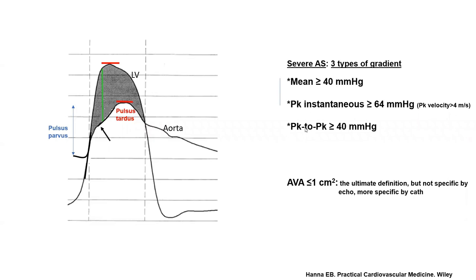We are somewhat lucky in the cath lab because peak-to-peak gradient is often approximately equal to the mean gradient. Mean gradient is usually approximately equal to peak-to-peak gradient, and it is approximately two-thirds of the peak-instantaneous gradient. If you forget, just remember the guidelines: severe AS is defined by a mean gradient over 40 mmHg. The gradients are very specific for severe AS — if you fulfill the gradient criteria, you do have severe AS. You don't even need to look at the valve area.